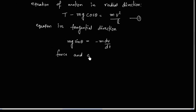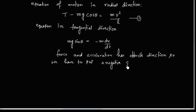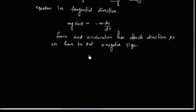We have negative sign because force and acceleration both are in opposite direction. M cancels. So we have G sin theta is equal to minus dv by dt.